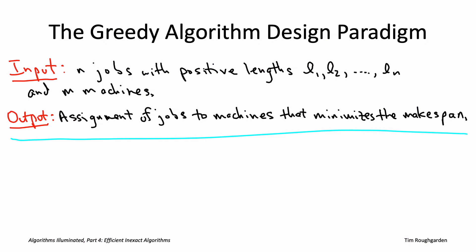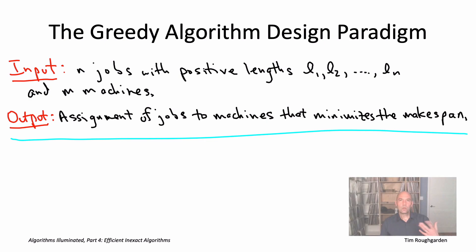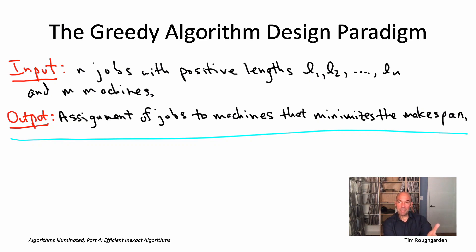Like all of the problems we're going to be discussing in this video playlist, the makespan minimization problem is NP-hard, and we will actually prove that once we get to the part of the playlist where we talk about how to prove problems are NP-hard. So we need to give up on a general, fast, always-correct algorithm. But we can ask: could there be a fast heuristic algorithm that works on all inputs, is always fast, and is in some sense approximately correct? As discussed in previous parts, the greedy algorithm design paradigm is usually a great place to start when you're first trying to understand a problem.